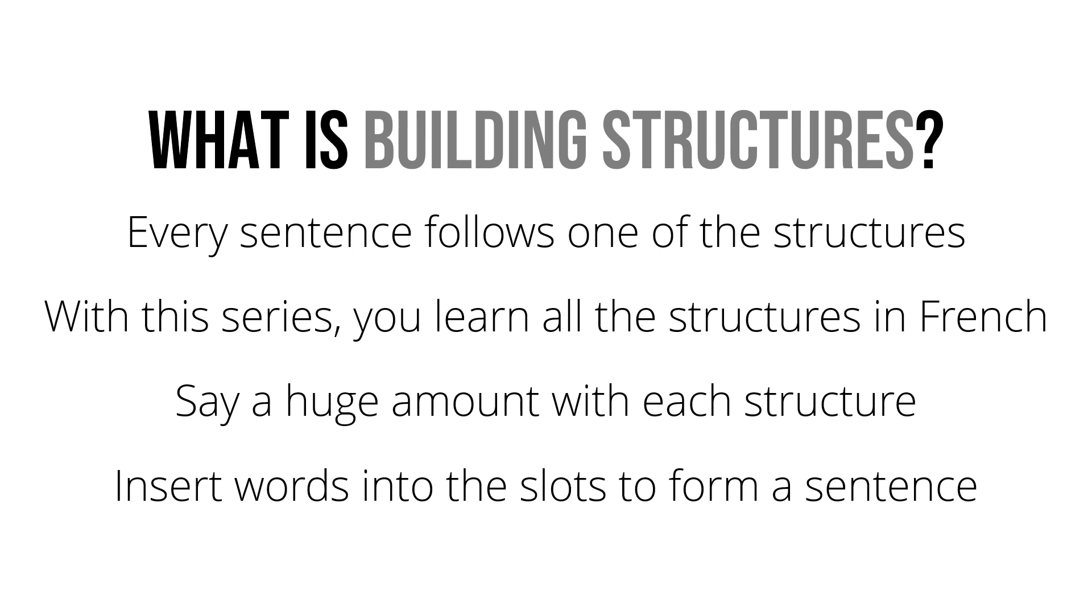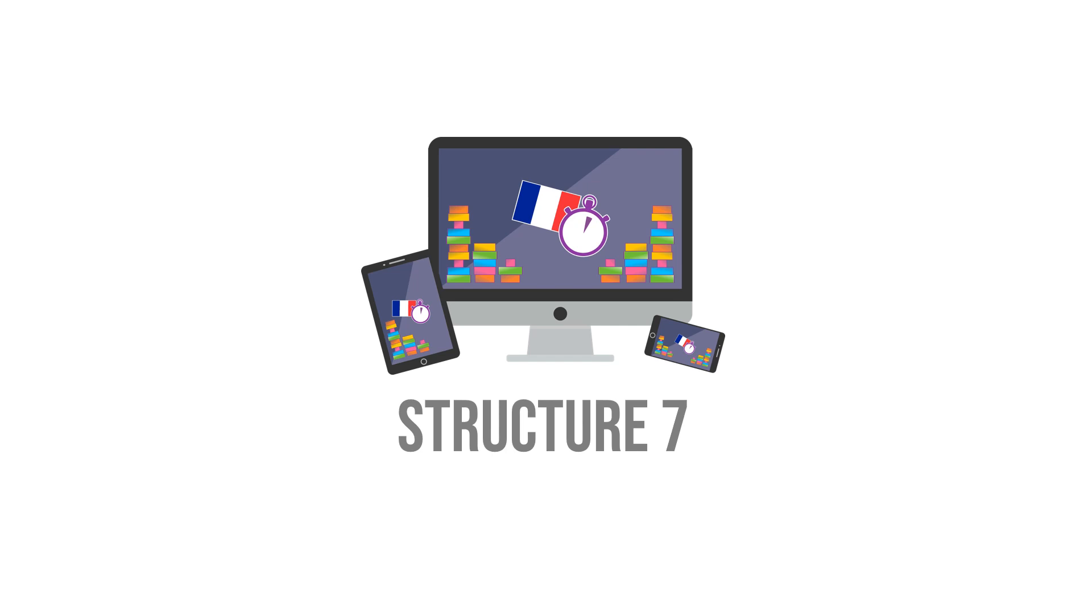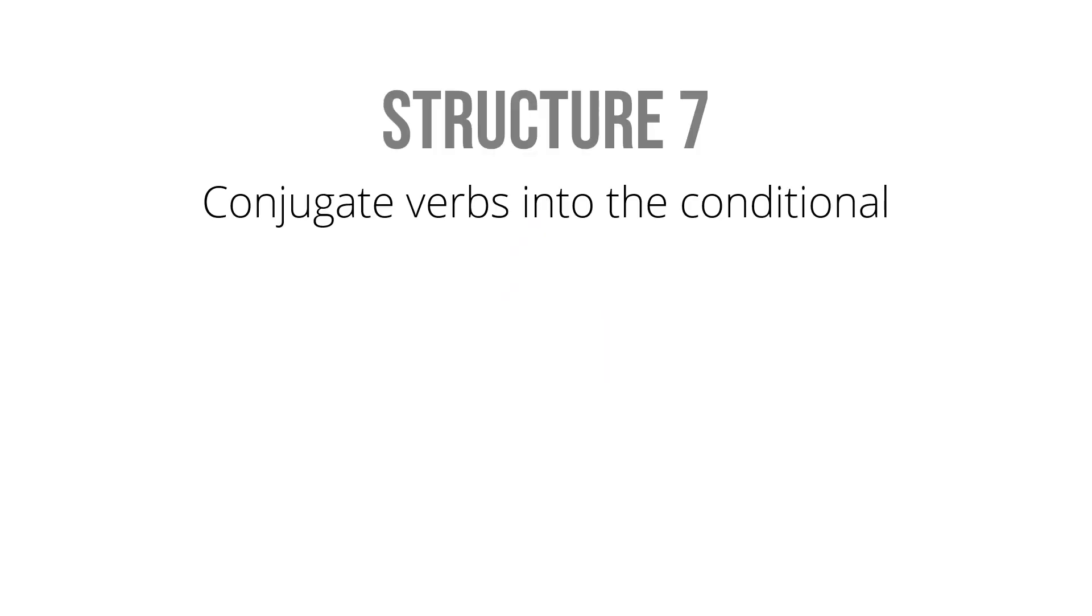This course introduces you to Structure 7. The seventh structure, as I said, is where we explore conjugating verbs into the conditional. The conditional is a tense we've looked at before, but only with infinitive carriers. However, when you conjugate other verbs into the conditional, you can use them to say what would happen.